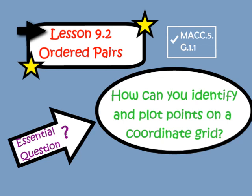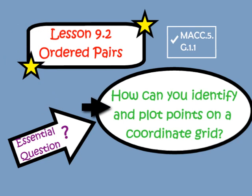Hi 5th graders, welcome to lesson 9.2, Ordered Pairs. The essential question for this lesson is: how can you identify and plot points on a coordinate grid? Now go ahead and open up your GoMath workbooks to lesson 9.2, found on page 185, and let's get started.